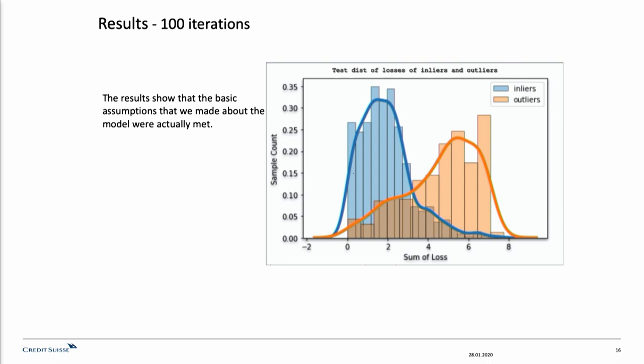And these are our results after 100 iterations. Here, we show the probability distribution function over the sum of loss, and we start observing that the two categories, the inliers and outliers, start to distinguish.